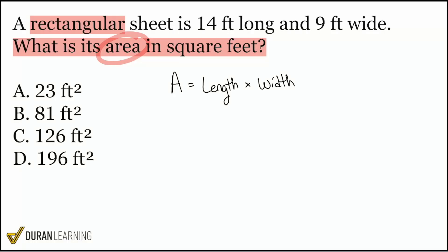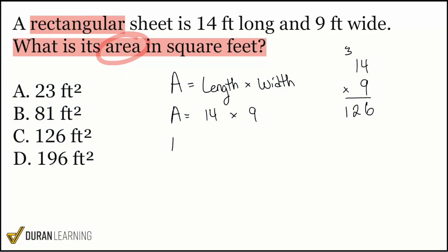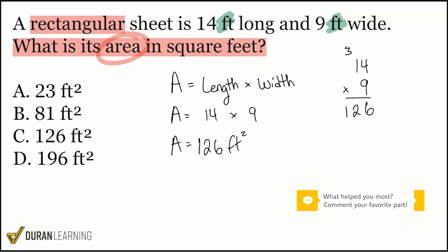It's the product of the length and the width together. All we have to do is see if we're given the length and width, plug it in, and we're good. A rectangular sheet is 14 feet long and 9 feet wide. So the length is 14 and the width is 9. 14 times 9: 4 times 9 is 36, carry the 3. 1 times 9 is 9, carry the 3 is 12. That gives 126. Because we performed feet times feet, the final answer is in square feet — 126 square feet, which is answer choice C.